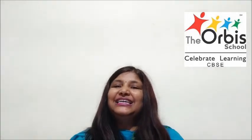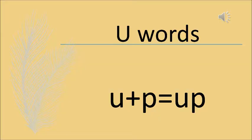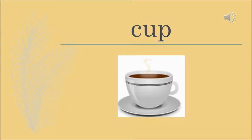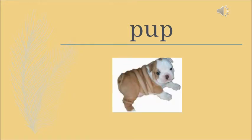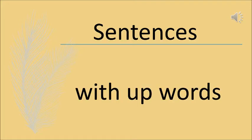So the words are up, cup, and sub. Today we will be doing UP words. We know the sound of U is 'uh' and the sound of P is 'pub.' The first word is cup — a cup is a utensil in which we drink tea. The next word is sup — sup means supper or dinner. And pup — a small baby dog is called a pup. So the words are cup, sup, and pup.